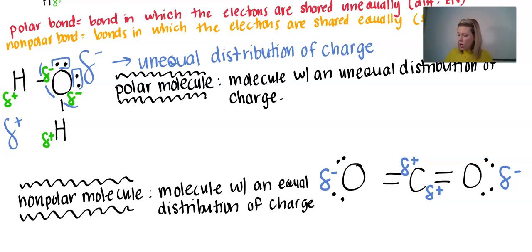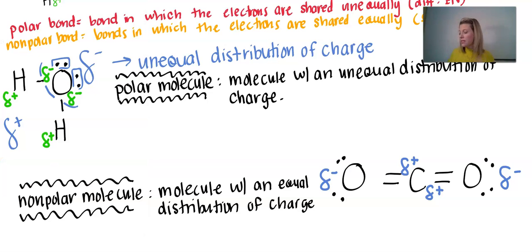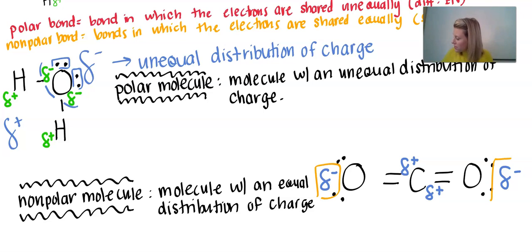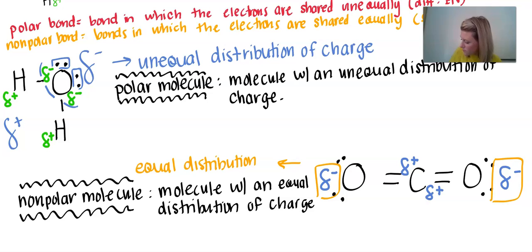In chemistry it's challenging because we envision things in two dimensions when they're really three. The easiest way to recognize that the charge is distributed equally is to think about this molecule like a seesaw — they have to be balanced on the outside to stay balanced. Our negative charge is distributed equally onto the left-hand side and the right-hand side, making this an equal distribution of charge, and therefore a nonpolar molecule.